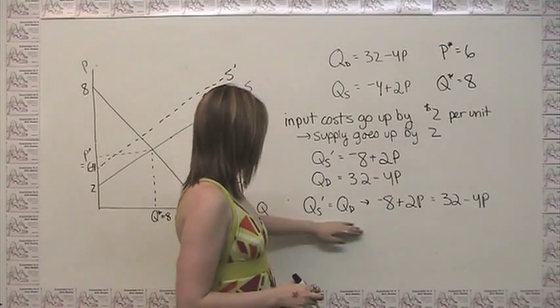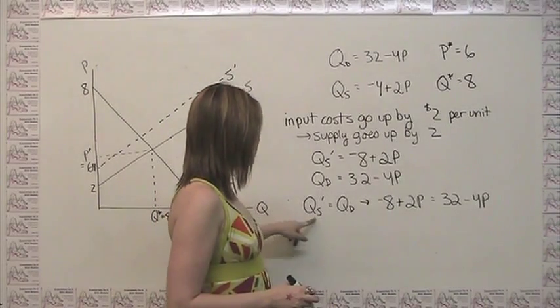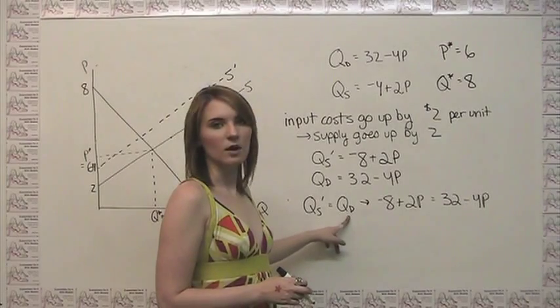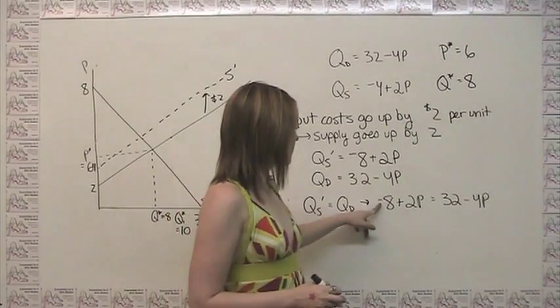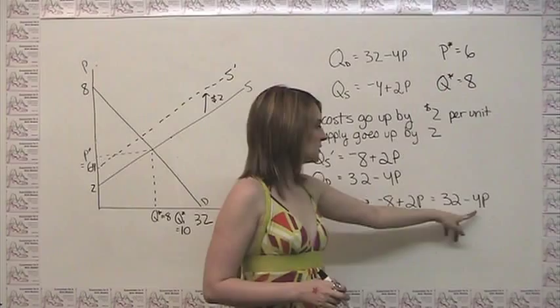So what we want to find is the intersection of these two curves, which is going to happen where our new quantity supplied is equal to our quantity demanded, or rather where negative 8 plus 2p is equal to 32 minus 4p.